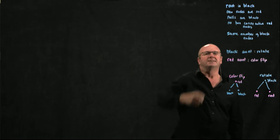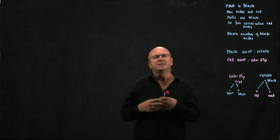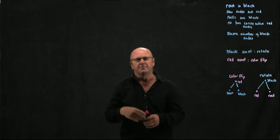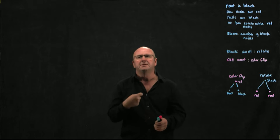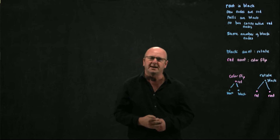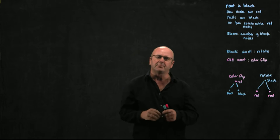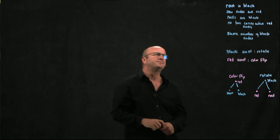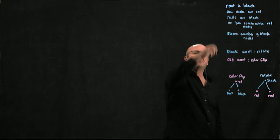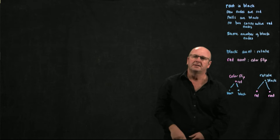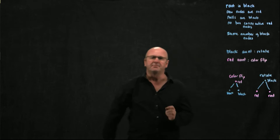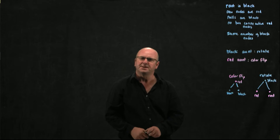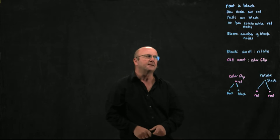New nodes are red — we've already taken care of that in our add methods. When we add a node, by default we make it red by setting the black boolean to false. Null nodes are black, and we need to remember that when we're looking at our rules for rotations and color flips.